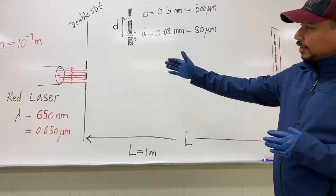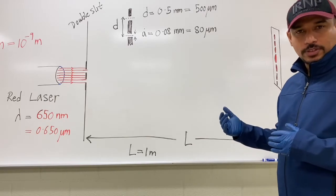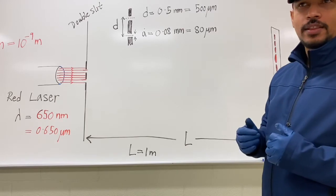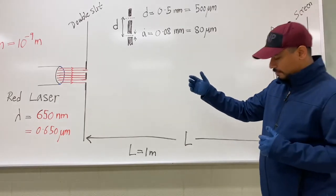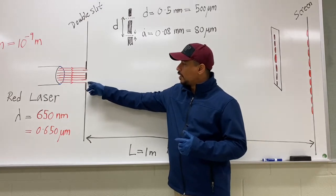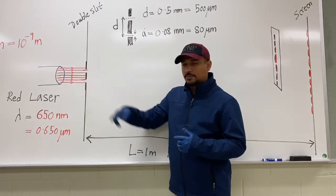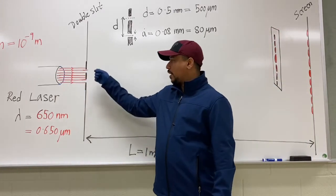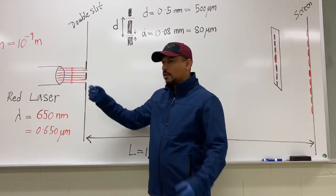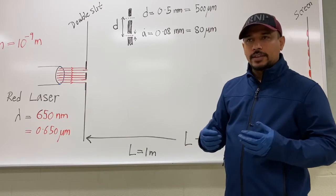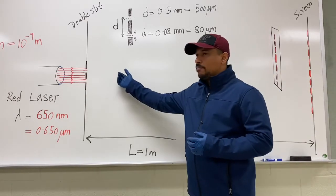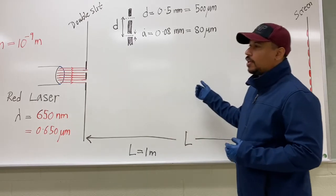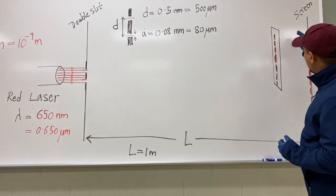So far we treated light as rays; now we are going to treat light as waves. Waves interfere. Here you have two light waves coming from the two slits, and they are in phase — because they are coming from the same source. They are traveling in the same medium and the same direction, so we can see interference of these waves when they reach the screen.